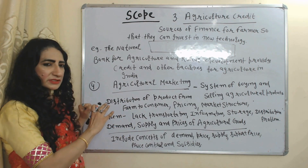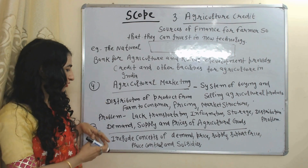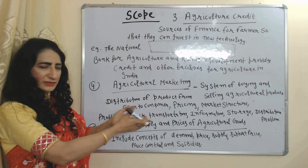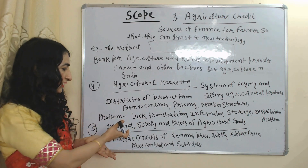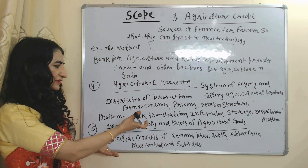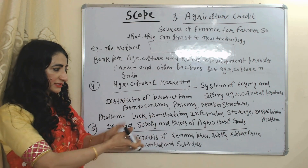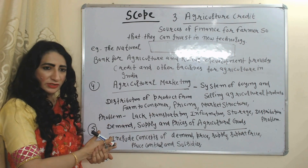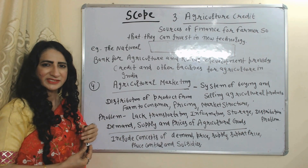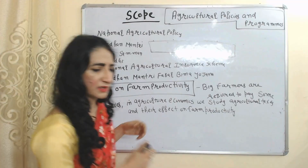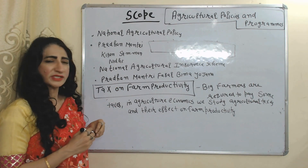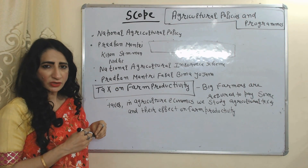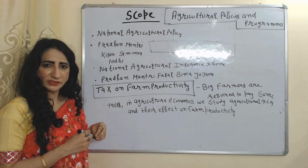Agricultural economics includes the concepts of demand, supply, and prices of agricultural goods. For example, it includes demand theory, pricing theory, support price, price policy, price control, and the subsidy system.